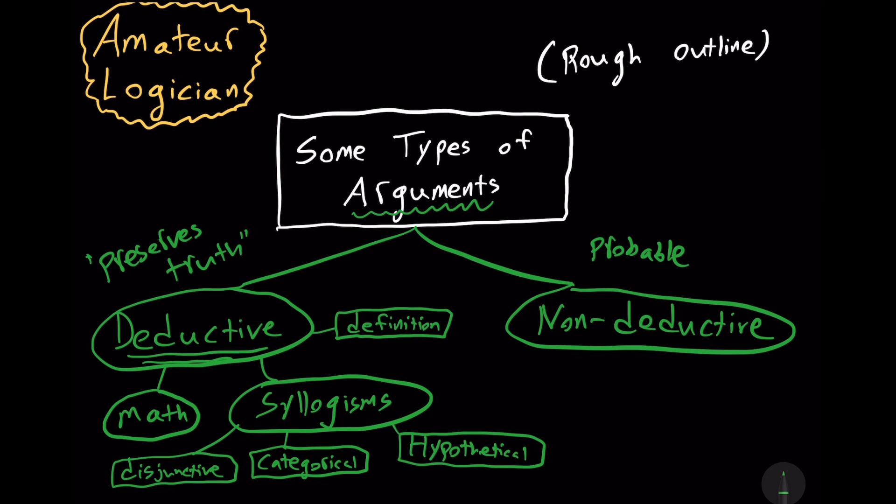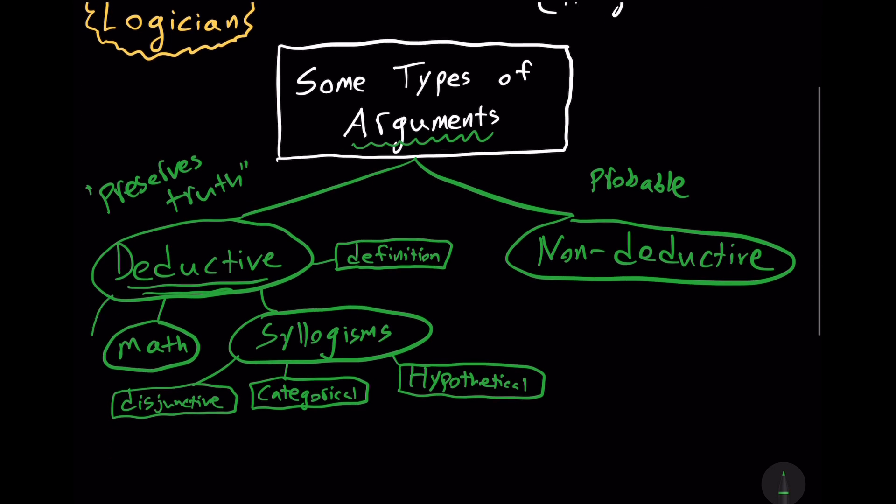We also have one of my favorite types of deductive arguments, the reductio ad absurdum. On my website, amateurlogician.com, I have an entry on the reductio ad absurdum, the formal and informal version. In the formal sense, a reductio ad absurdum takes some premises and then derives a contradiction based on some assumption.